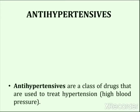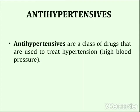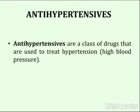Antihypertensives are a class of drugs that are used to treat hypertension, which is a high blood pressure condition. Antihypertensive therapy seeks to prevent the complications of high blood pressure such as stroke and myocardial infarction. A stroke occurs when the blood supply to part of your brain is interrupted or reduced, preventing brain tissue from getting oxygen and nutrients, and brain cells begin to die in minutes. A myocardial infarction, also known as a heart attack, occurs when blood flow decreases or stops to a part of the heart, causing damage to the heart muscle.